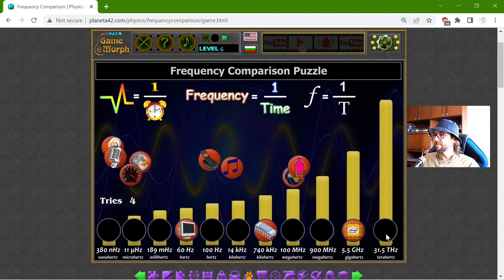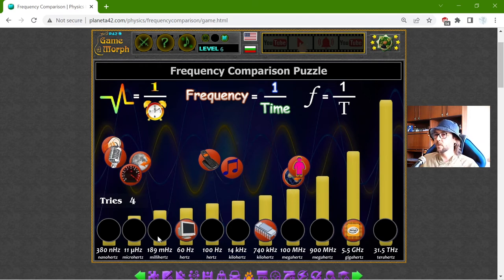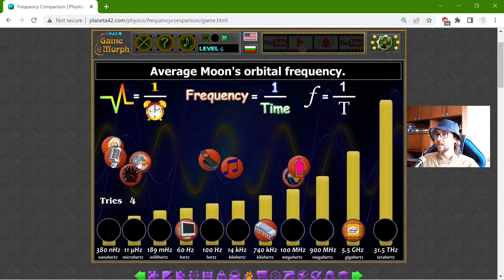And what is that? Tremendous, tremendous frequency. This is 31 THz. Alright, the average Earth rotation should be very low frequency. The Moon too.